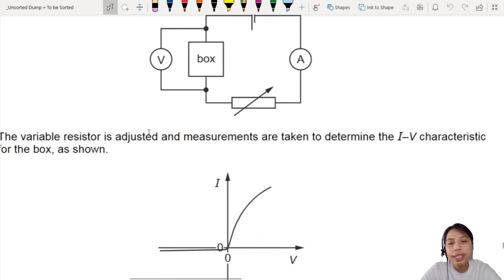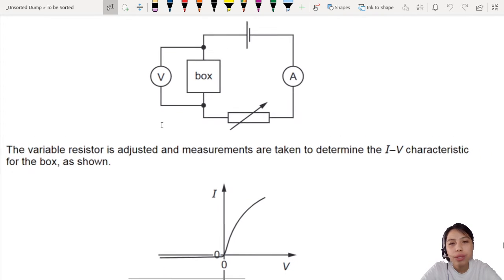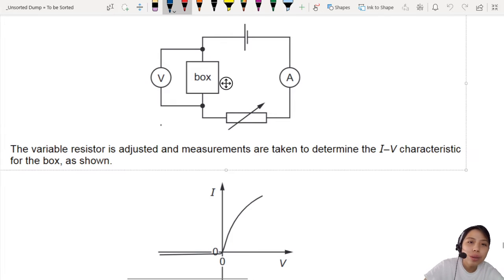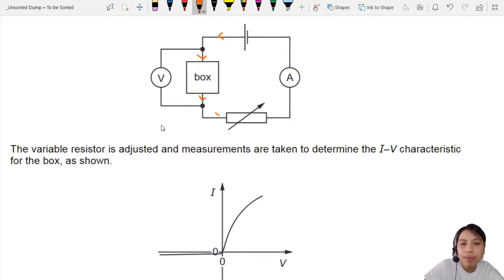We are measuring here the current through the box because current through the whole circuit is the same. And also, let me label for you. So the current flowing through the box is your I and the V is the potential drop across the whole box.